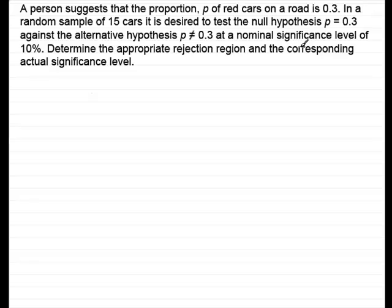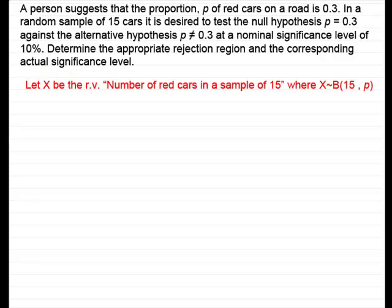What we've got here is a binomial model. If we assume that the probability of success — that is, getting a red car — always remains constant and is independent, then we can define a random variable X. Let X be the number of red cars in a sample of 15, where X is distributed binomially with 15 trials and probability of getting a red car equal to p.